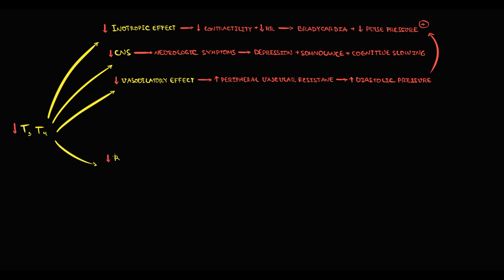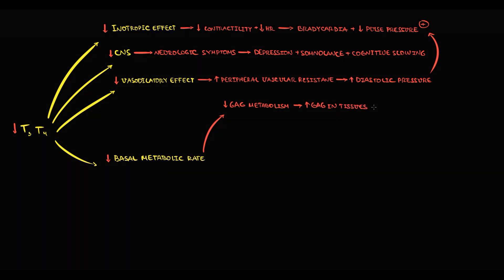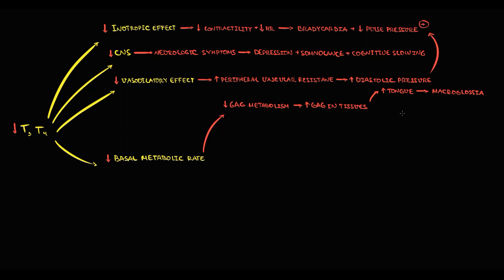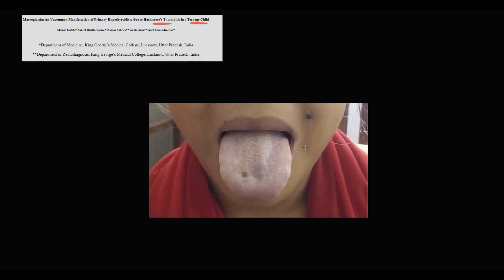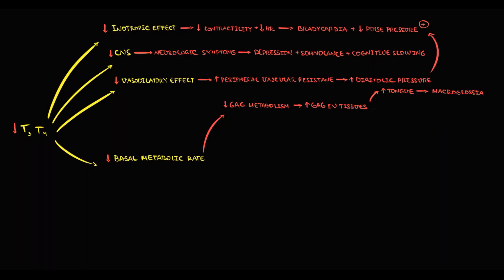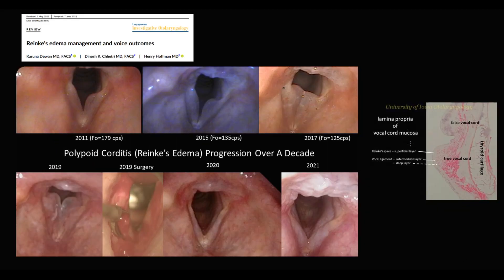Decreasing thyroid hormones substantially lowers metabolic rate. First, this causes decreased metabolism of glycosaminoglycans, which begin to accumulate in tissues. Increasing amounts of glycosaminoglycans in tongue tissue cause macroglossia. Also, glycosaminoglycans accumulate in the vocal cords — the higher the amount, the thicker the vocal cords become, and thick vocal cords cause hoarseness. The superficial layer of the vocal cords, called Reinke's space, is where glycosaminoglycans accumulate and substantially increase vocal cord thickness.